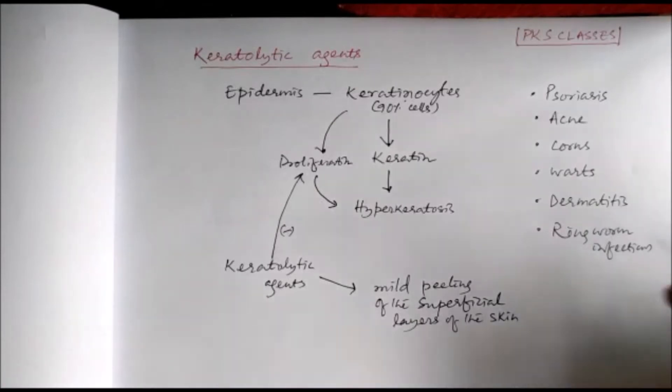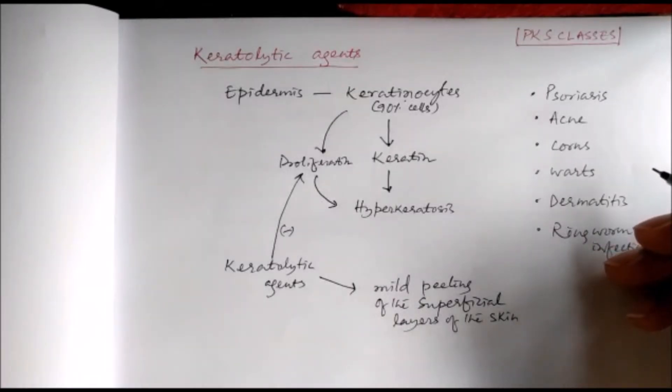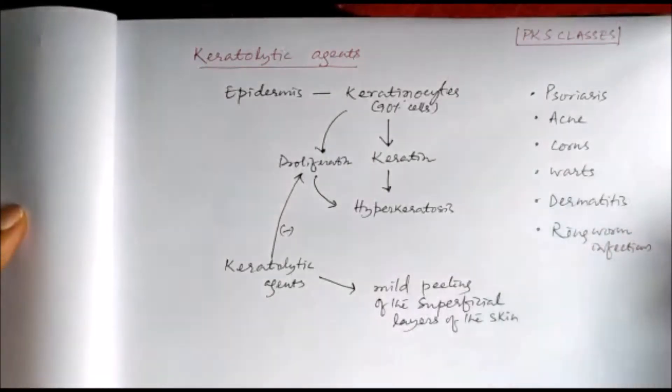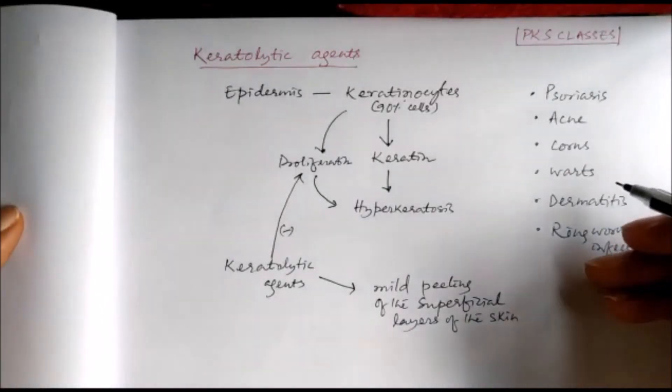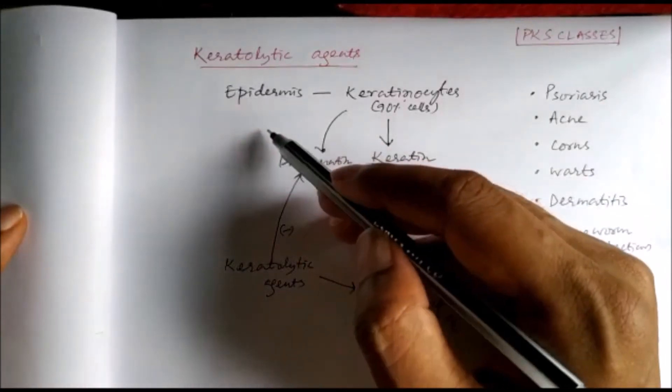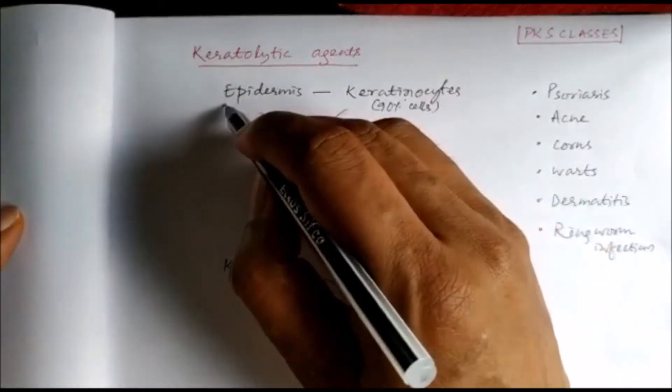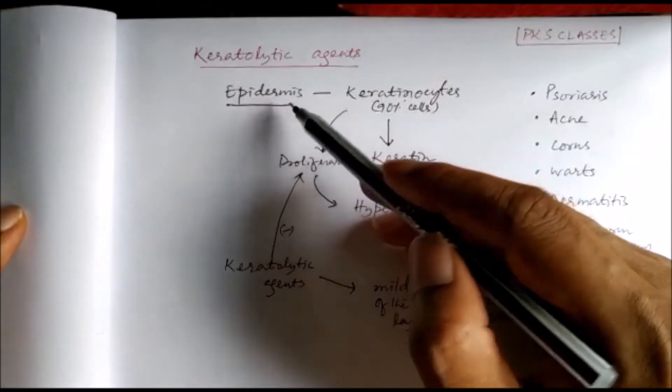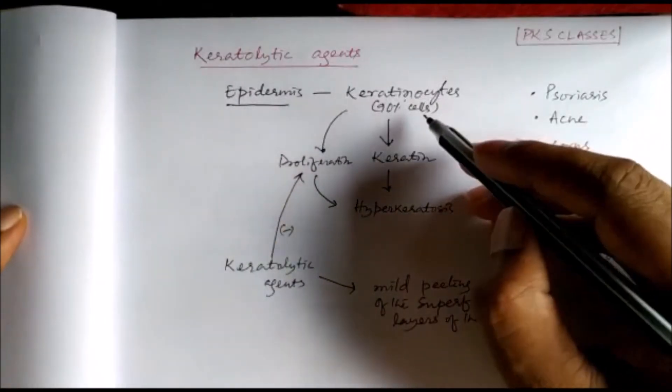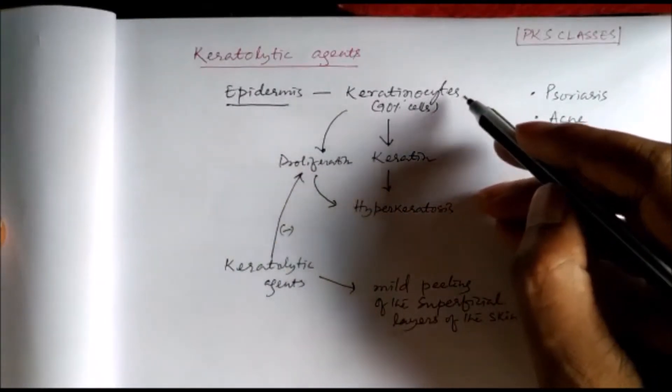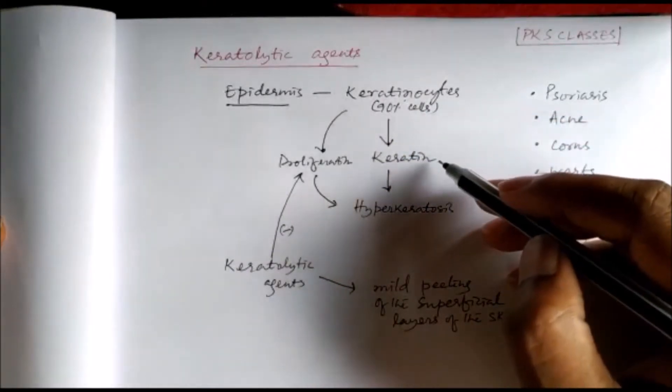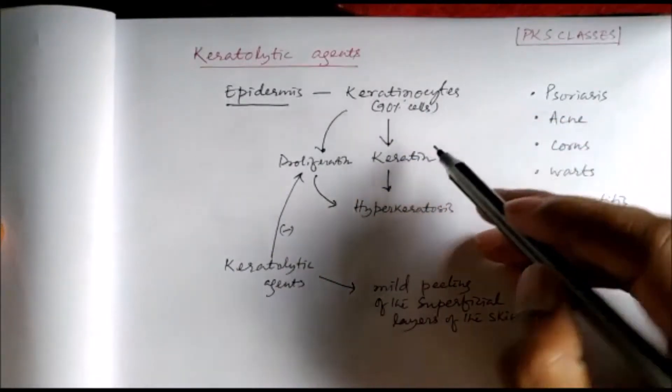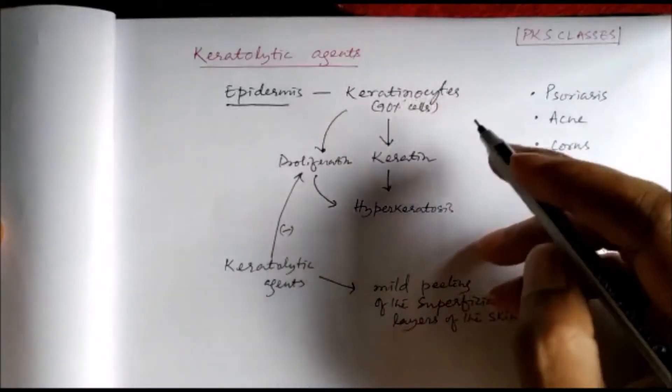Namaskar, today we will study keratolytic agents. As we have already discussed, the skin has three layers: epidermis, dermis, and hypodermis. The epidermis is the outermost layer with four types of cells. The major cells, 90% of those cells, are keratinocytes which produce keratin. If there is proliferation of keratinocytes, there will be increased production of keratin resulting in hyperkeratosis.